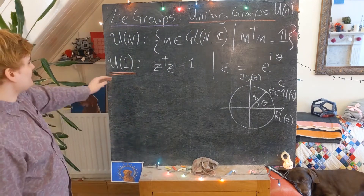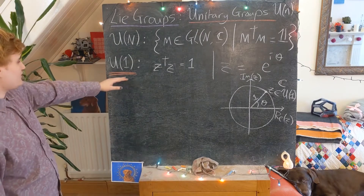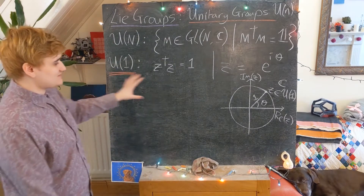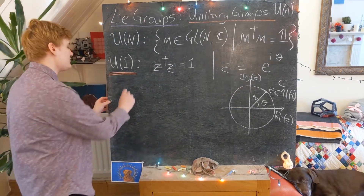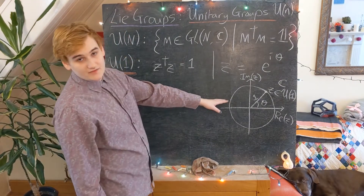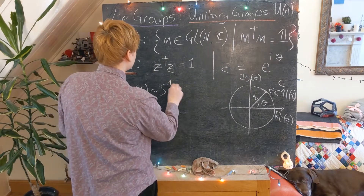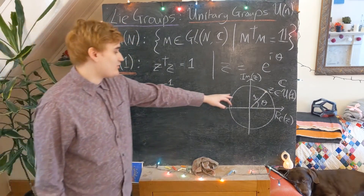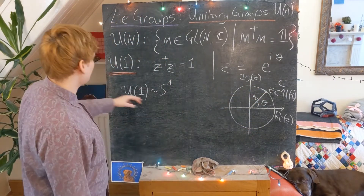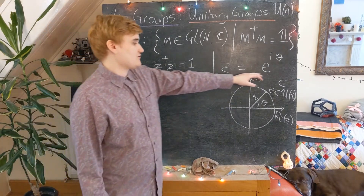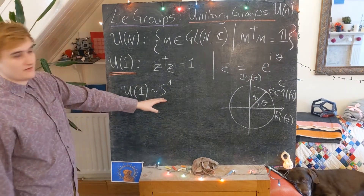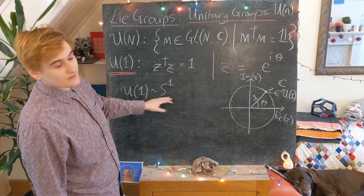We've seen that we can represent the one-dimensional unitary group in this exponential form. What this means topologically is that the group U(1) is isomorphic to the circle S1, since we can identify every point on the unit circle with an element of the group through this relation. So the group U(1) topologically is isomorphic to S1.